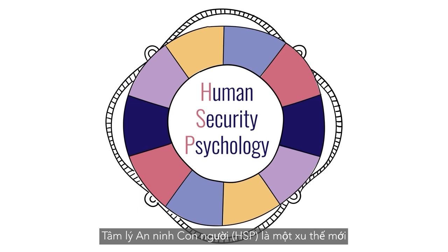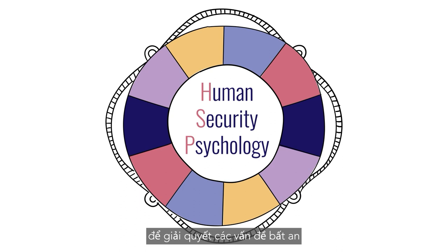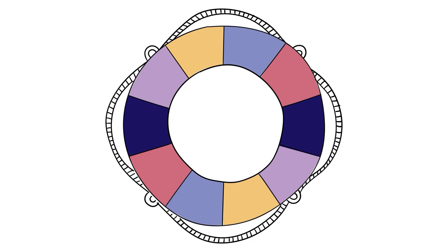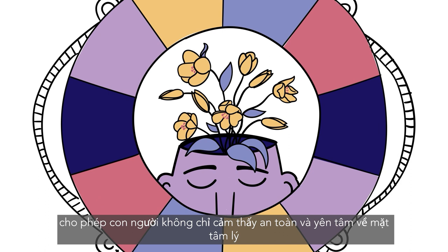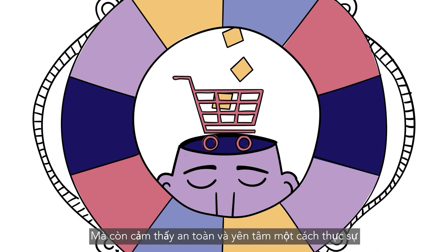Human security psychology is a new perspective that encompasses efforts within psychology to address issues of insecurity arising from these ten dimensions of human security. It outlines research and practice within psychology that enables human beings to not only feel safe and secure psychologically, but also to be safe and secure materially.